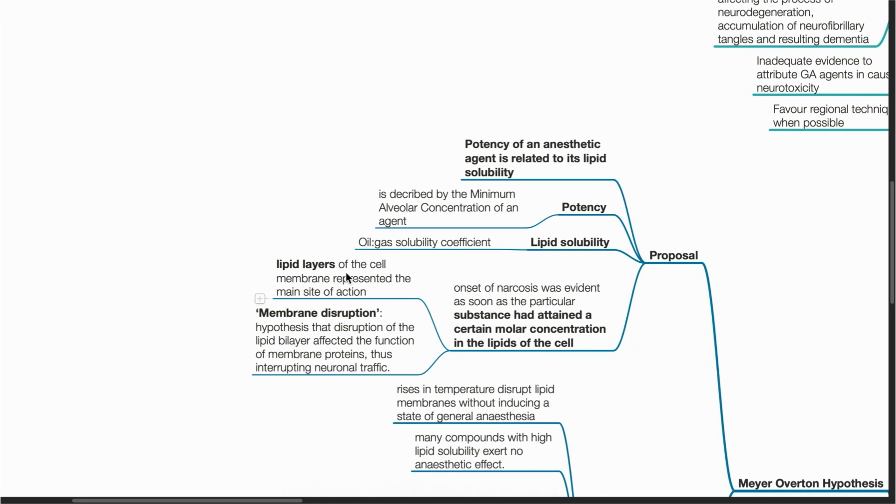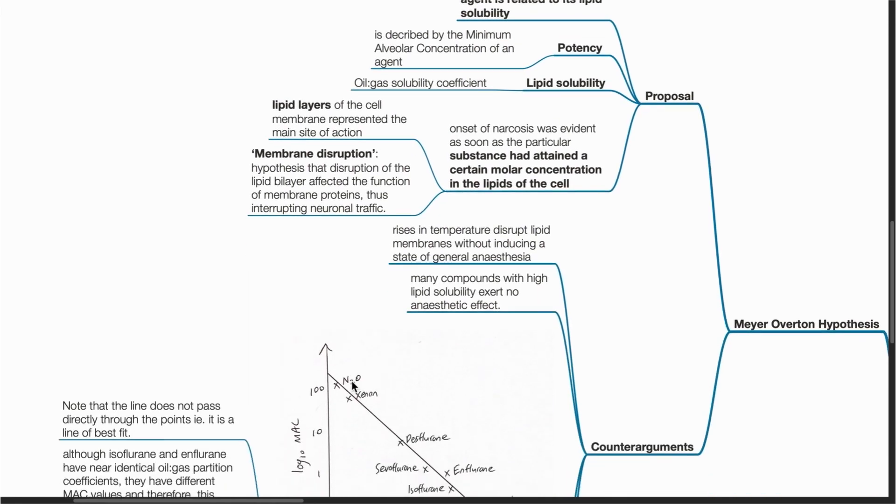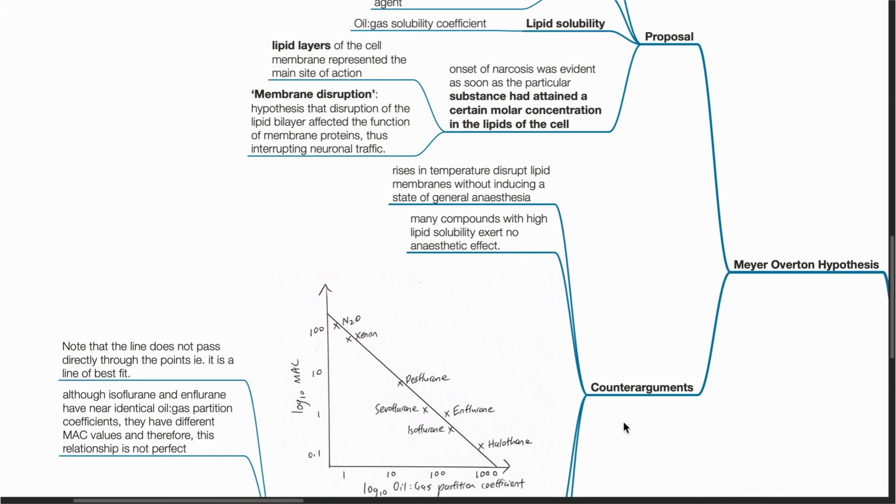Lipid layers of the cell membrane represent the main site of action. The term membrane disruption is a hypothesis that the disruption of the lipid bilayer affected the function of membrane proteins, thus interrupting neuronal traffic. The counter-arguments for this hypothesis includes...